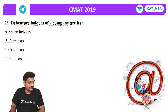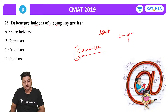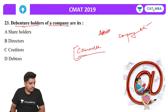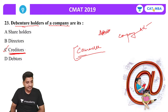Next question: Debenture holders of a company are classified as what? This is a commerce and Company Act related question. The correct answer is creditors — debenture holders are creditors of the company.